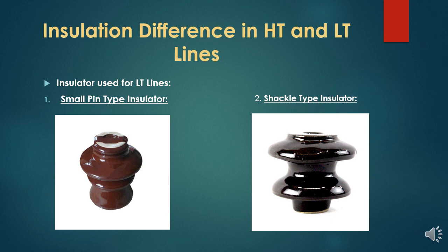High-tension line and low-tension line also differ in the insulators used. Since the low-tension line voltage level is lower, the insulators used are of different categories. In the low-tension line, we use small pin-type insulators or shackle-type insulators. These are common insulators that insulate the transmission line from towers. These pin-type and shackle-type insulators are basically designed for the voltage level of the low-tension line.